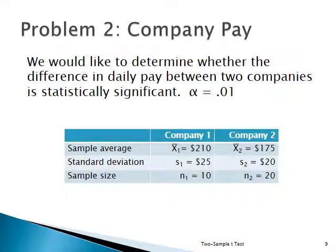In this problem, we're looking at company pay. We wonder if there's a difference in daily pay between two companies. Company 1 is paying $210 a day and Company 2 is paying $175. But these are just samples — only 10 from Company 1 and 20 from Company 2. To say that the $35 difference is statistically significant, you should test this first.